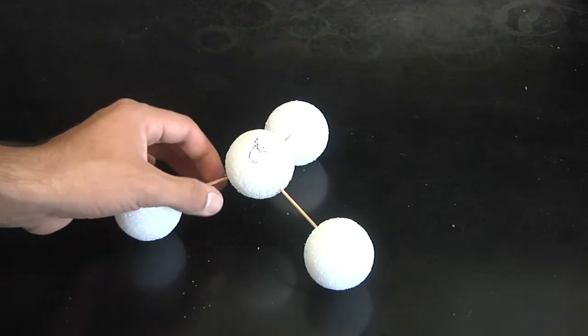This guy right here would be called a tetrahedral. Unless he's only got one pair of electrons, then he would be called a trigonal pyramid. Because notice, there are three bonds, but it still stands kind of like a pyramid. If there are two pairs of electrons, this will, again, be a bent molecule.